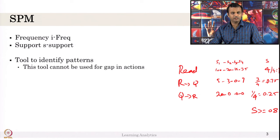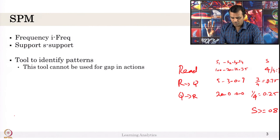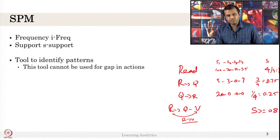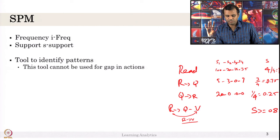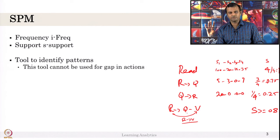This tool cannot handle gaps in actions. For example, some might be interested to identify patterns with one gap — like 'read, quiz, video' — where you want patterns occurring immediately as well as with a gap of one action in between, to account for noise where a student intended to watch a video but accidentally clicked quiz and immediately went back. If you want to consider this kind of gap, this tool will not help and we would have to create a new tool.